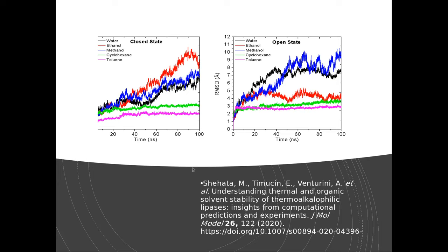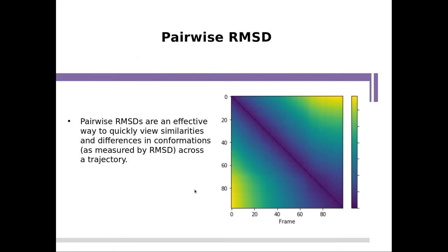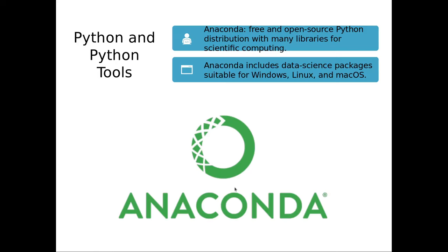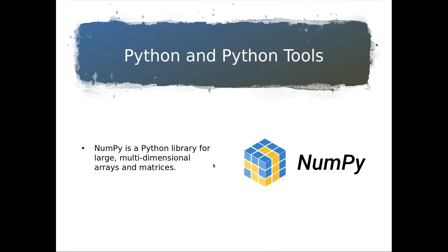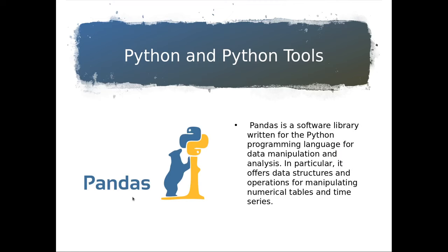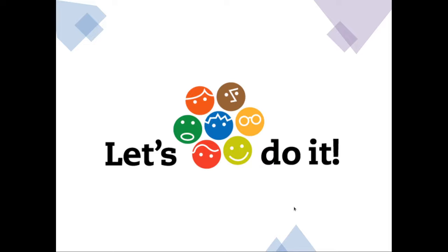To summarize: one-dimensional RMSD compares all structures to one reference and shows change over time. Pairwise RMSD is an effective way to quickly compare all frames or conformations in your trajectory. For this we use Python with Anaconda, which contains NumPy, Jupyter, Matplotlib, and also Pandas — a library for numerical tables and time series — though we won't use Pandas today. Once we do the calculation, you will understand why I mentioned all these tools.